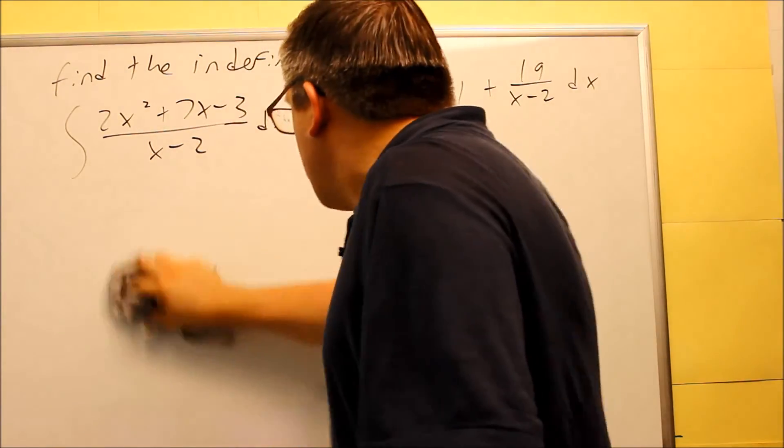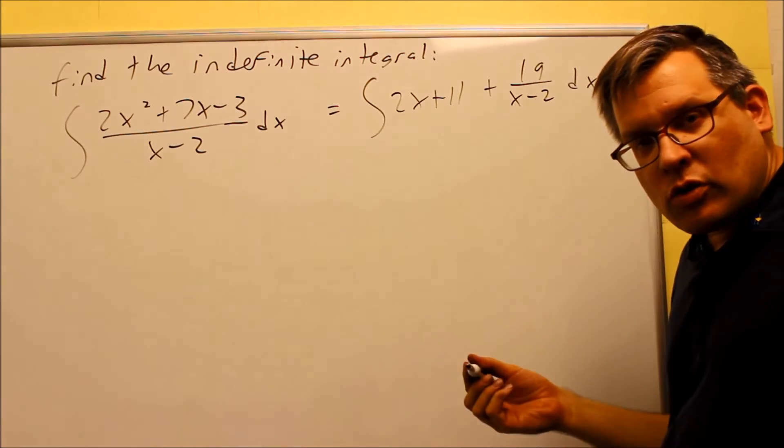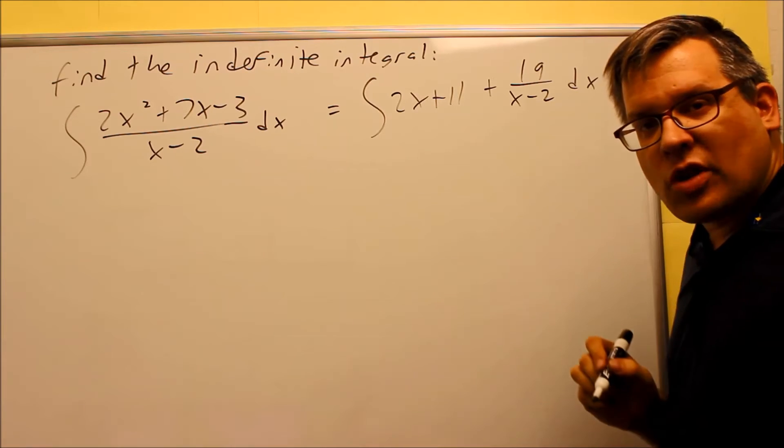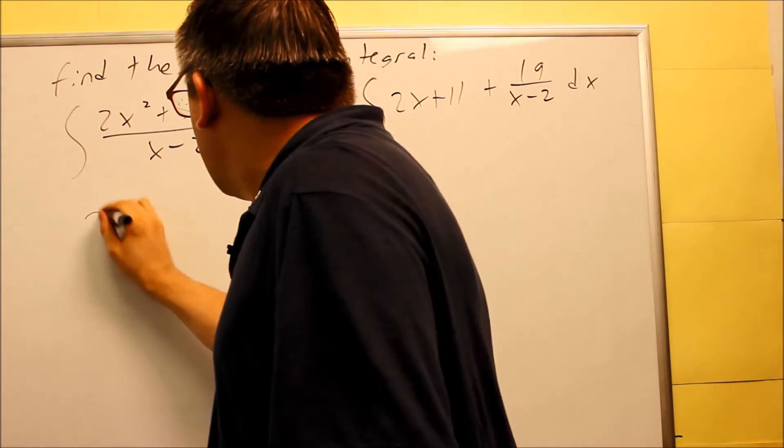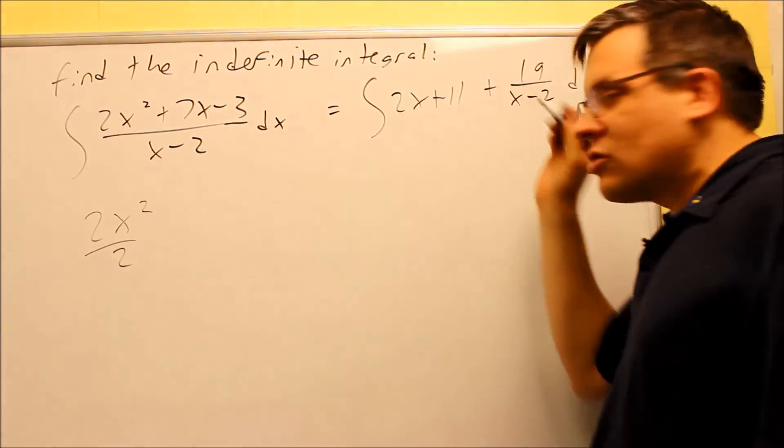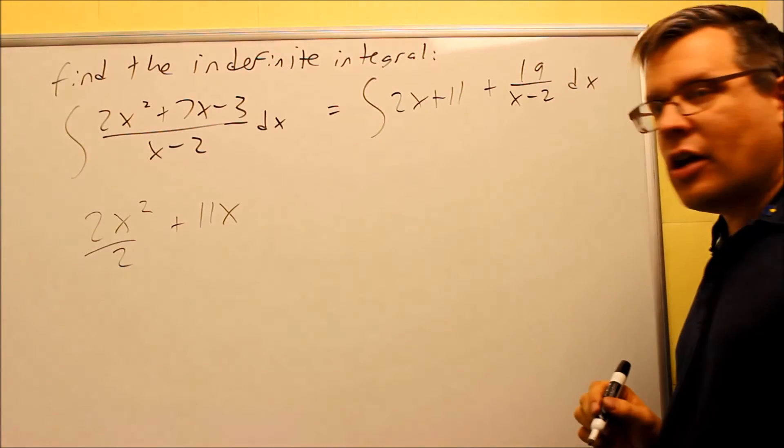So the very first two pieces are just going to be involving my inverse power rule, so I don't have to worry about doing any u substitutions for that. So when I do the integration on it, I'm going to get 2x squared over 2, just integrating this directly, plus 11x I'll get on that one.